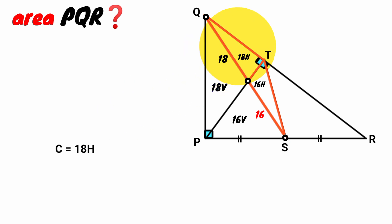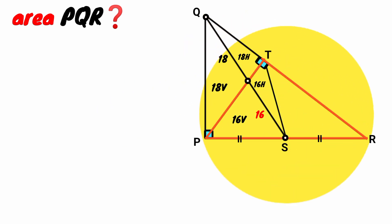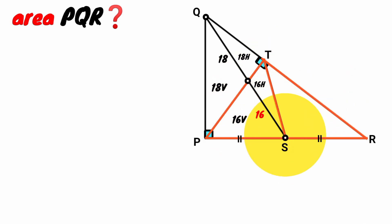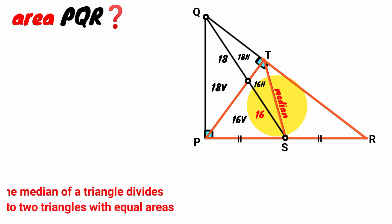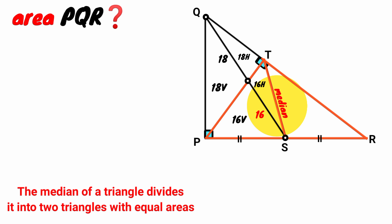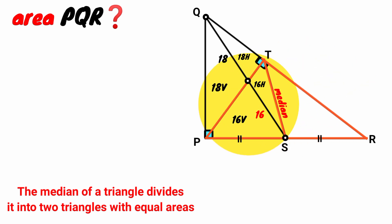Replace this C with 18H. We come to triangle PRT. The line ST bisects this side — that is, it is a median of the triangle. We know the median of a triangle, along with the side it bisects, also bisects the area, meaning it divides the triangle into two triangles with equal areas. So since this triangle has area equal to the sum of 16V and 16H, the area of the other triangle is also 16V plus 16H.